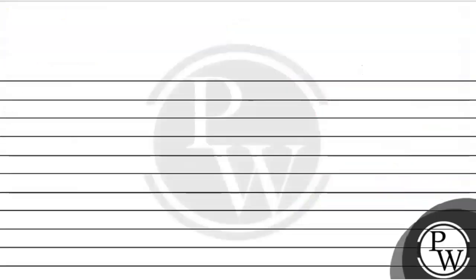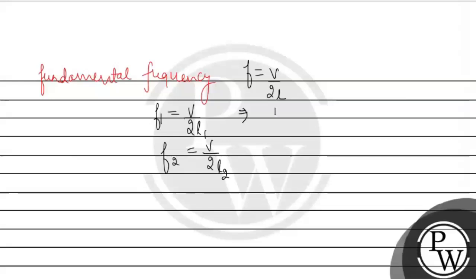Fundamental frequency is given as f equals v over 2 into l. So first we have f1 equals v over 2l1, then f2 will be v over 2l2. f1 is given as 120 equals v over 2 into l1, where l1 is 90 centimeter or 0.9 meter, whereas f2 is 180 equals v over 2l2.